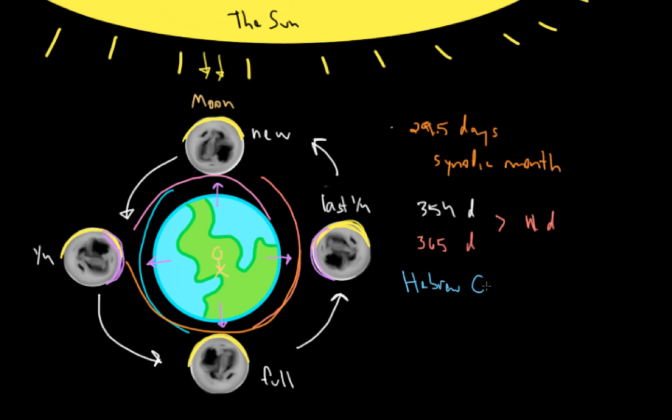And this is where we get the idea of leap days or leap months. And in different cultures, you have different ways of dealing with this. So we'll just look at one example, the Hebrew calendar.